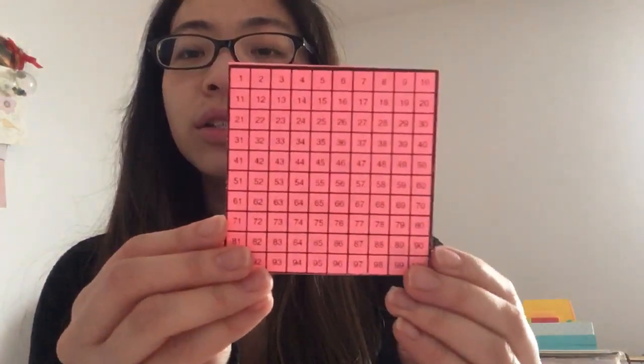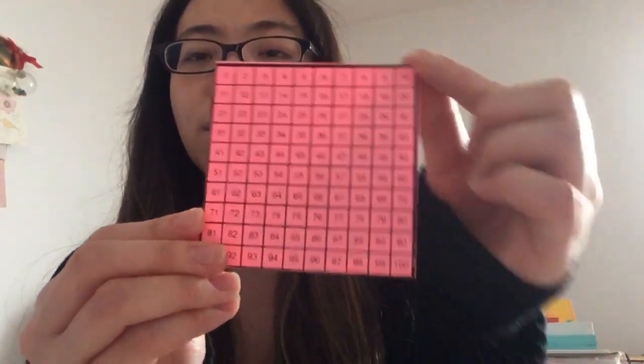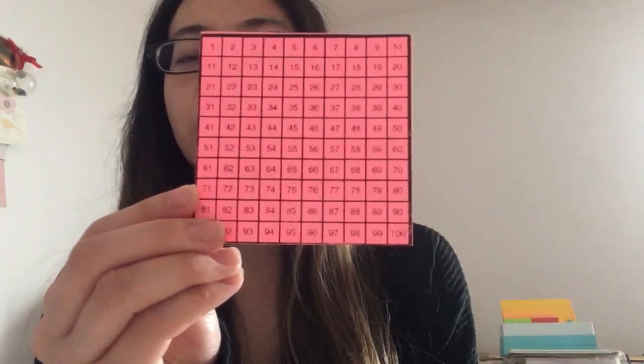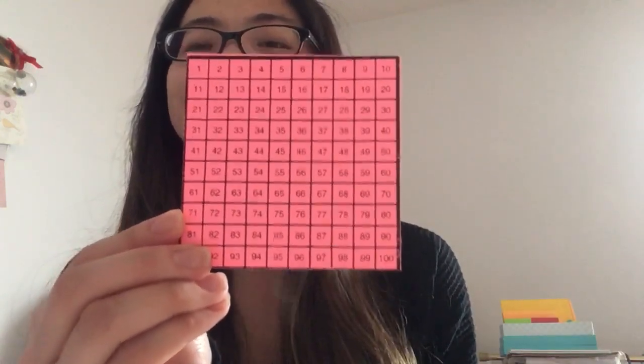We're going to first start off by counting by tens. So we're going to start with counting from ten all the way to one hundred. So right now with your finger, I want you to point to the number ten.